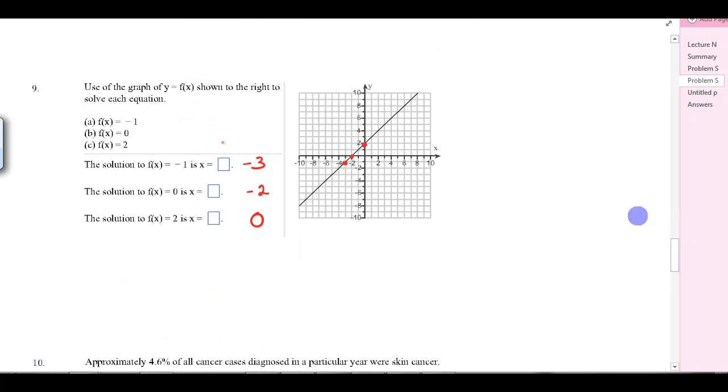Solve each equation. The solution to f of x equals negative 1. When y is negative 1, remember f of x is like y. So when you're at negative 1 on the y, the x value is negative 3. When y is 0, you're here and the x value is negative 2. When the y value is 2, you're at 0 on the x axis.